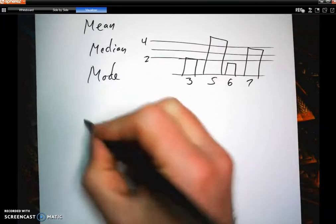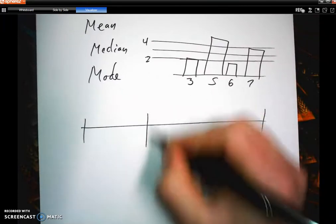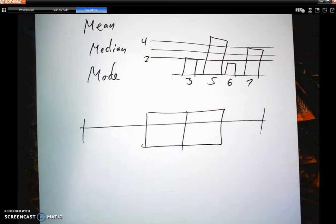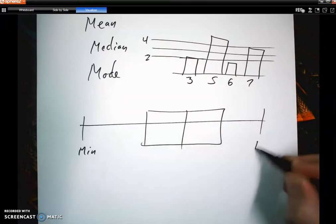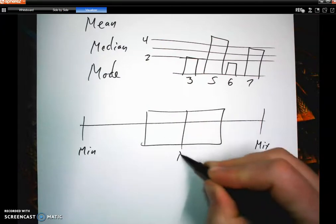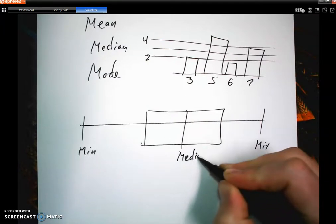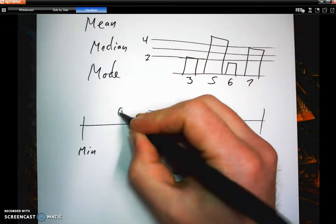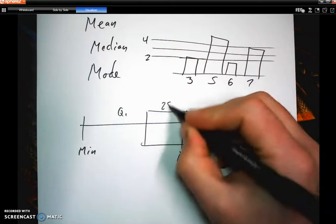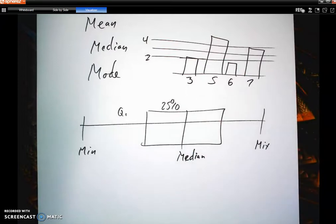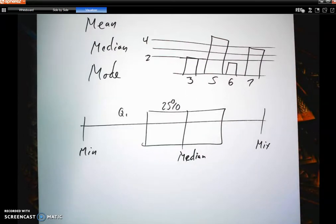Another thing you'll definitely see on the test is box and whisker plots. Remember those, where you have your minimum over here, your maximum there, your median is in the middle. You have quartile one, quartile two, quartile three, 25% of the data in between each thing. And answering some questions about box and whisker plots, you're definitely going to see that.